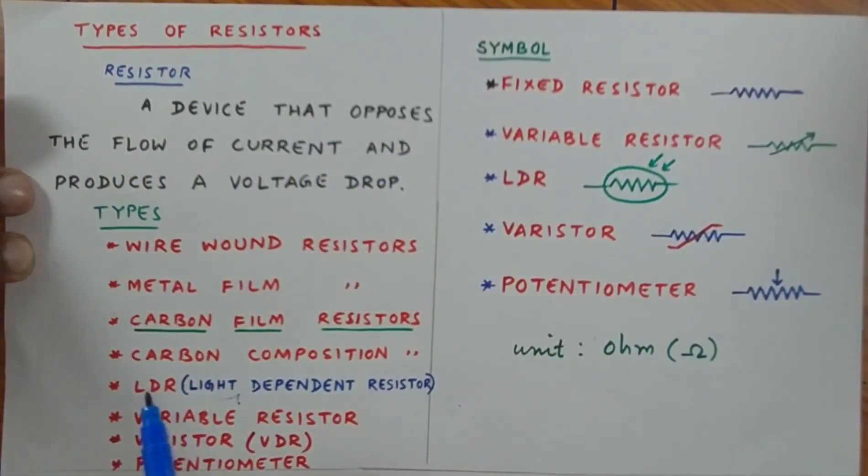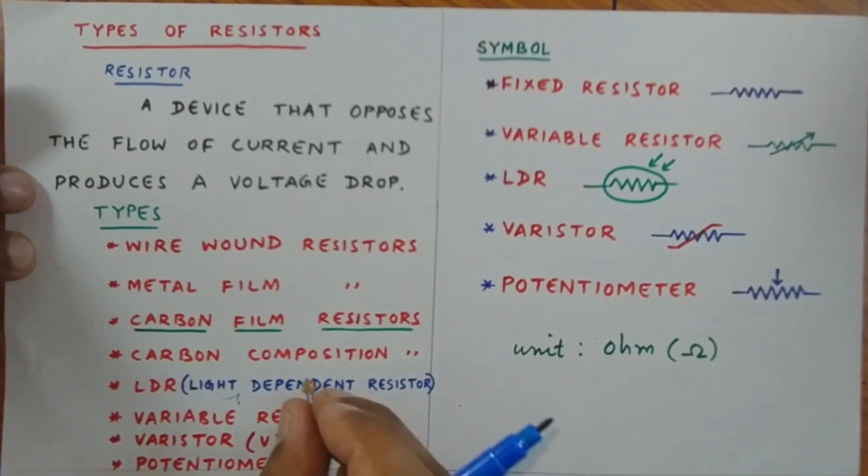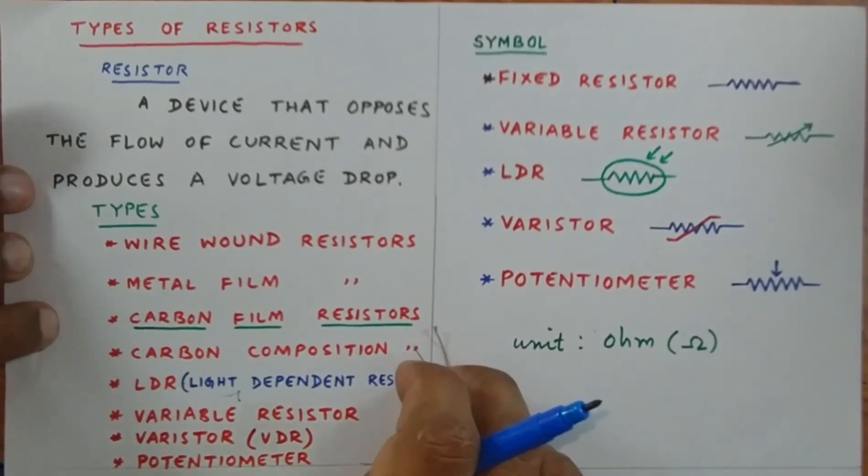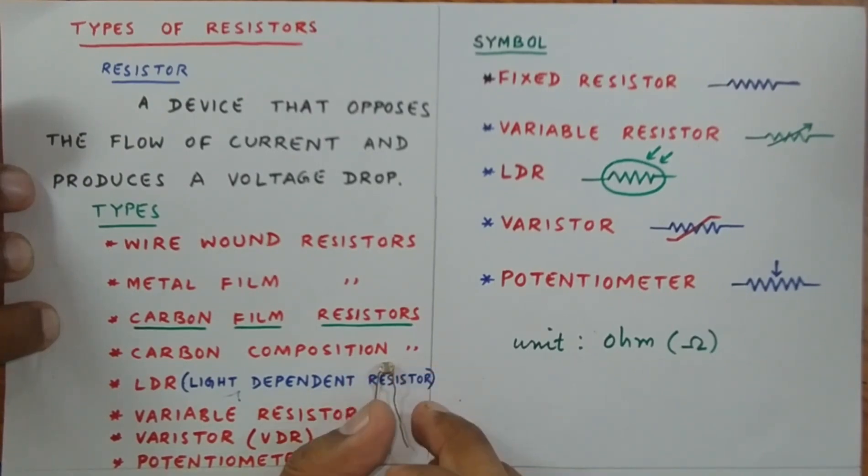Now there is one more type called carbon composition resistors. I do not have that to show you. Next is the LDR. LDR stands for Light Dependent Resistor. Here I have one. This is a light dependent resistor. When light falls on this resistor, its resistance decreases, so we call this a light dependent resistor.